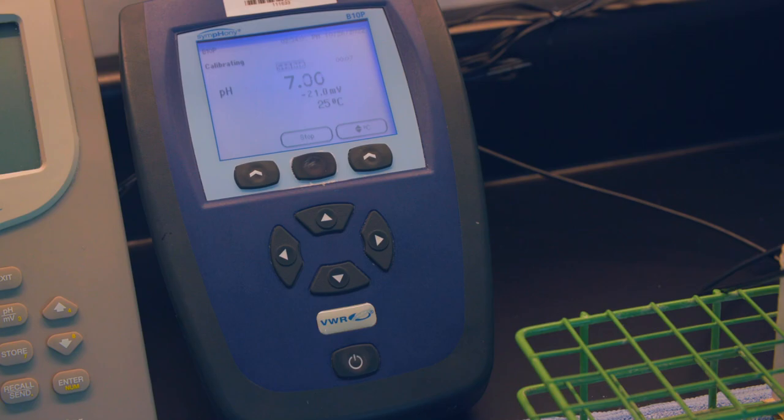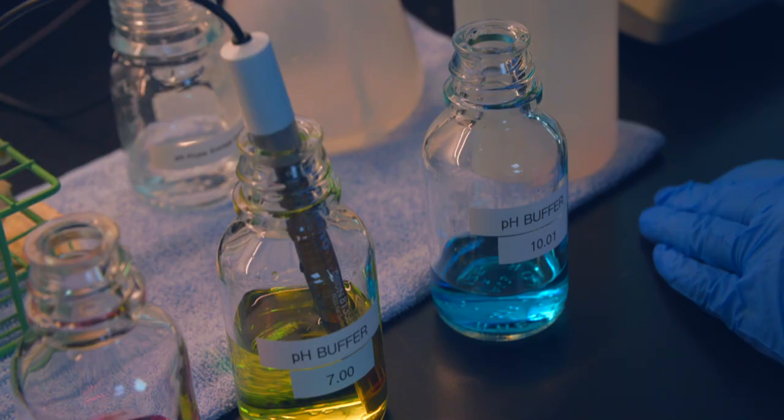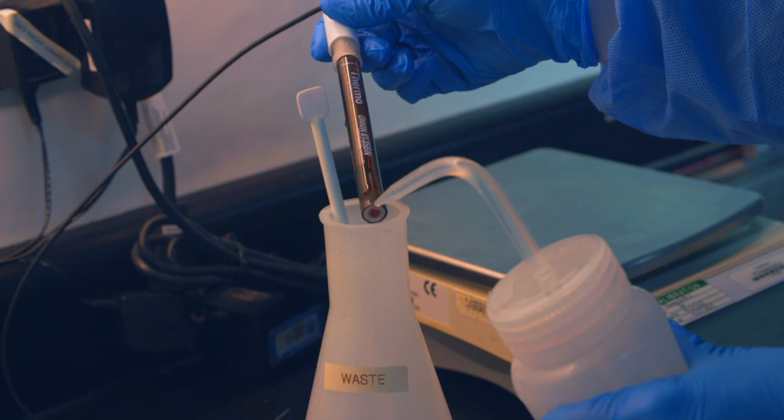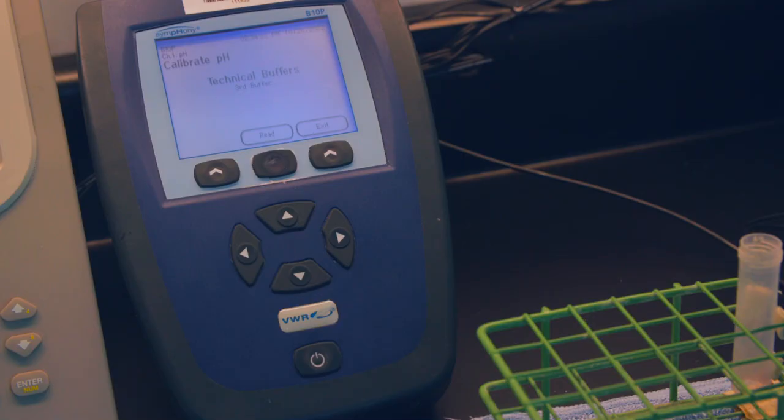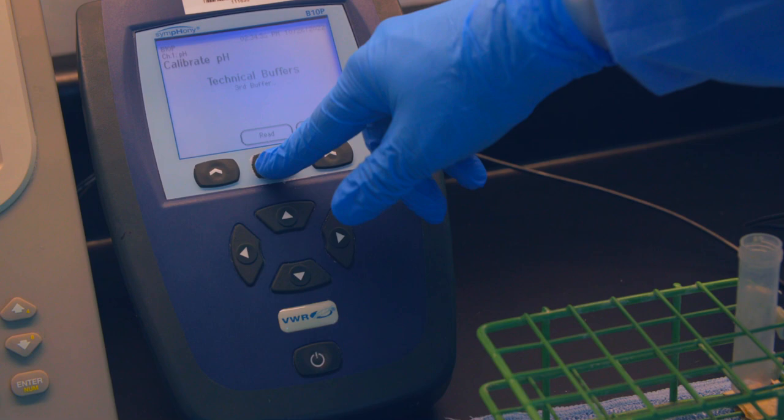Remove the probe from the solution and rinse with deionized water over a waste beaker. Place the probe into the pH 10.01 buffer and press the read button to start the final calibration. You will know the pH reading has stabilized when the pH indicator has stopped flashing and you hear a beep.